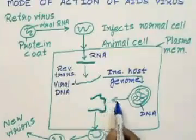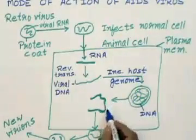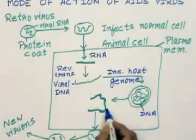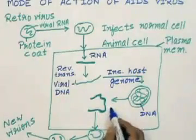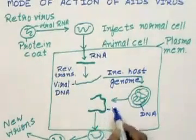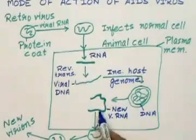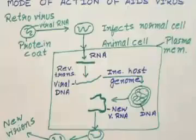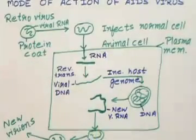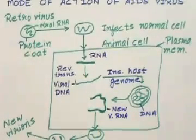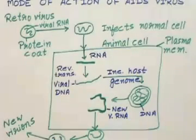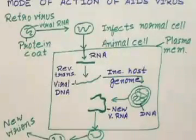This cell has now become an infected cell, and this is the new viral RNA. As new viruses come out, new virions are produced which can affect other cells. This is how the AIDS virus infects a normal human being.